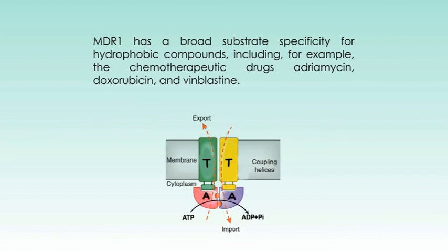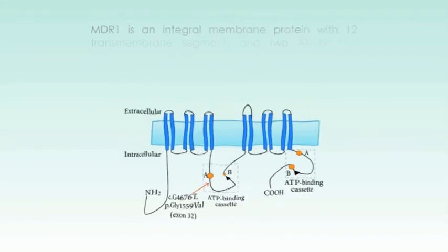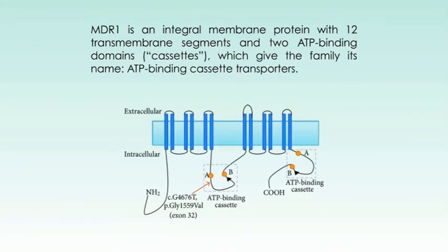MDR1 has a broad substrate specificity for hydrophobic compounds including, for example, the chemotherapeutic drugs adriamycin, doxorubicin, and vinblastine. This protein uses the energy derived from ATP hydrolysis to export these drugs out of the cell, thus preventing their accumulation within a tumor and blocking their therapeutic effects. MDR1 is an integral membrane protein with 12 transmembrane segments and two ATP-binding domains or cassettes, which give the family its name: ATP-binding cassette transporters.